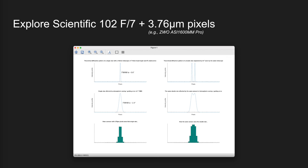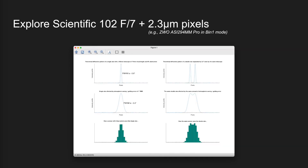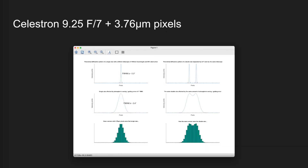As you can see, this system is not able to properly resolve two stars separated by 2.5 arc seconds. Now let's see what happens when using a camera with smaller pixels, like the ZWO ASI 294MM Pro in BIN1 mode with the same telescope — the two stars are now getting resolved, although barely. Finally, a Celestron 9.25-inch SCT used at F7 and coupled with a ZWO ASI 1600MM Pro is able to quite easily resolve the two stars.